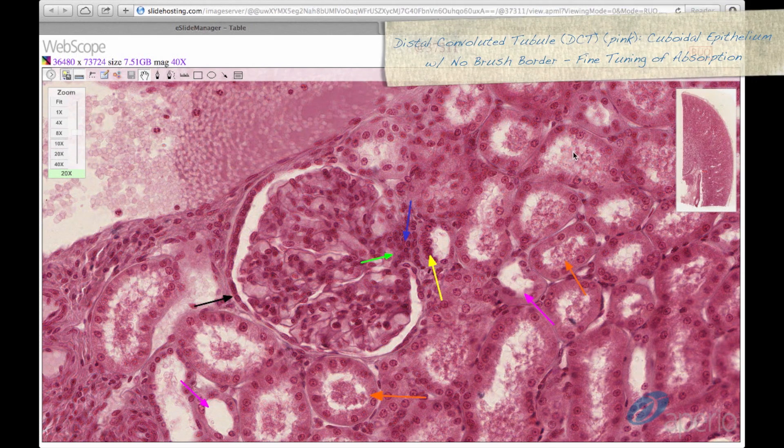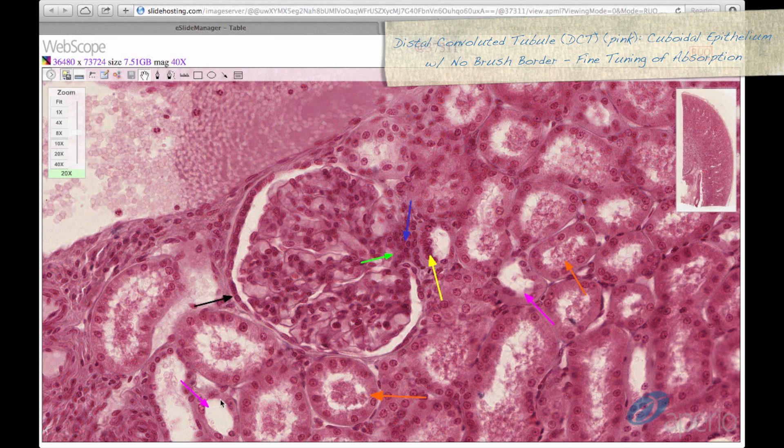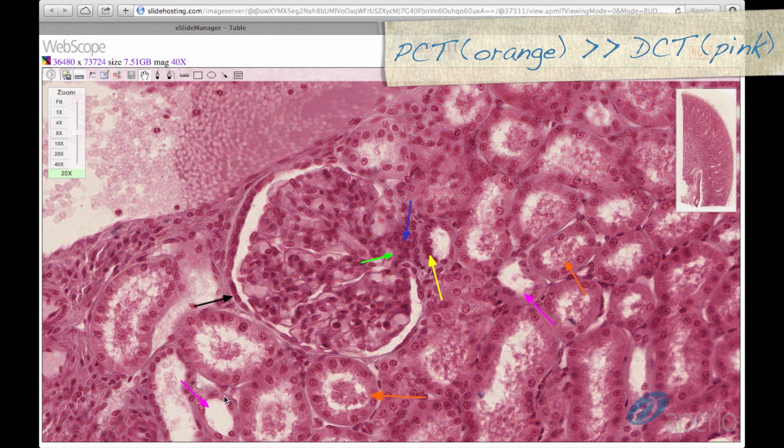We can also see the distal convoluted tubules here at the pink arrow. These are for fine-tuning of absorption and do not have a brush border. They also have cuboidal epithelium. The proximal convoluted tubules greatly outnumber the distal convoluted tubules.